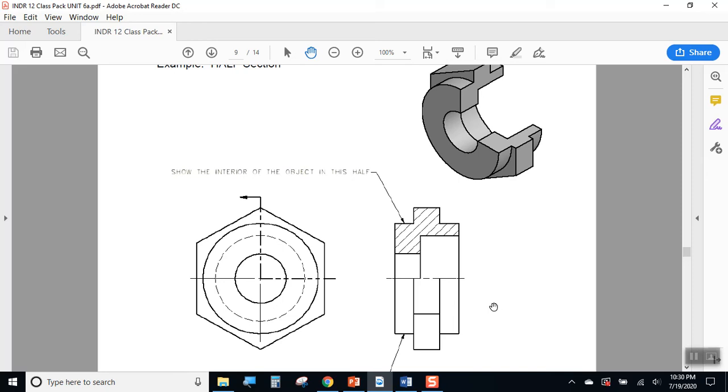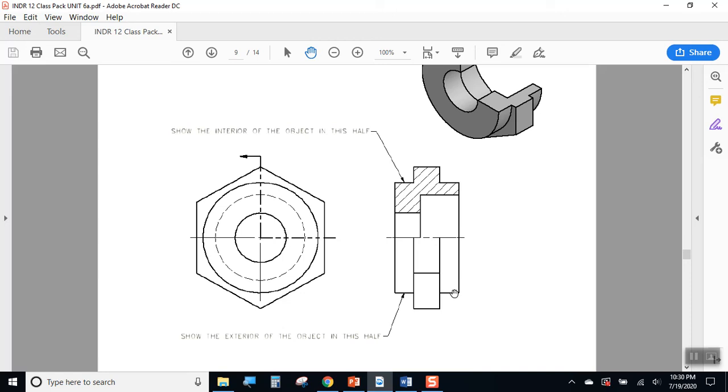There's nothing wrong with that. But in this case, what I'm able to do is I'm able to show half of the view in section. The other half just shows what's on the outside. So I get an exterior regular normal right side view.